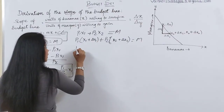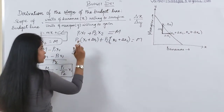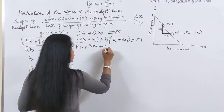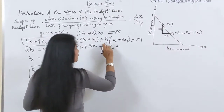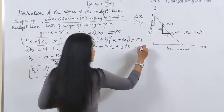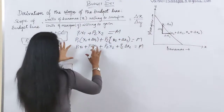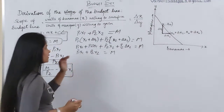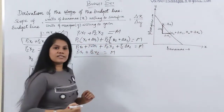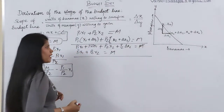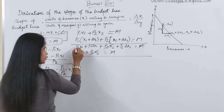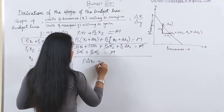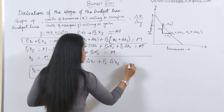Multiplying out: p1·x1 + p1·Δx1 + p2·x2 + p2·Δx2 = m. We then subtract the original equation p1·x1 + p2·x2 = m from this. The m cancels, p2·x2 cancels, and p1·x1 cancels. What remains is: p1·Δx1 + p2·Δx2 = 0.